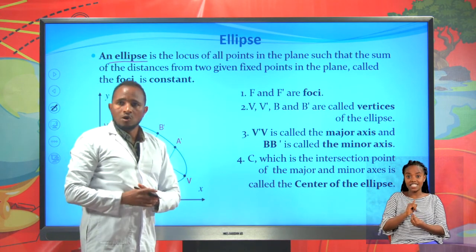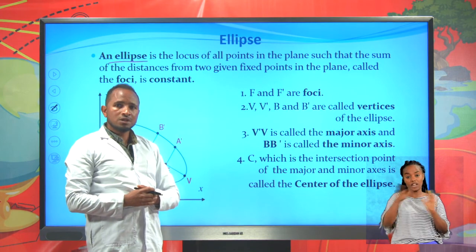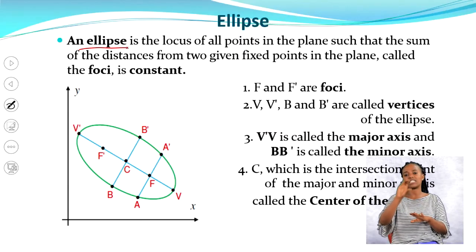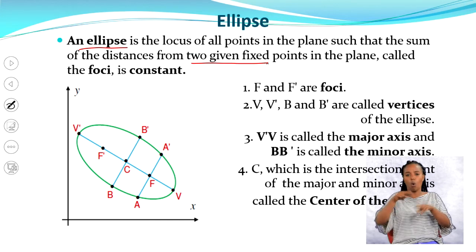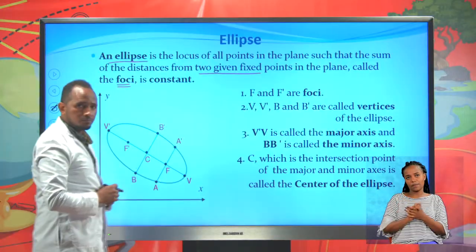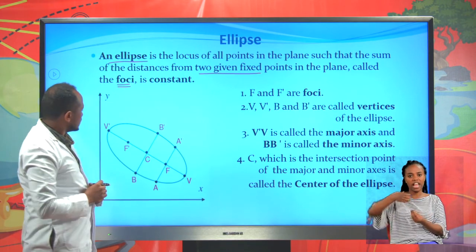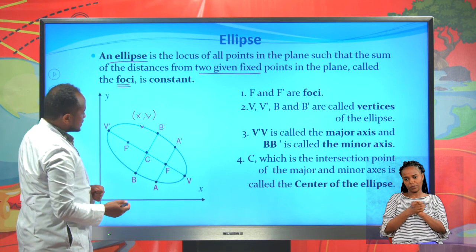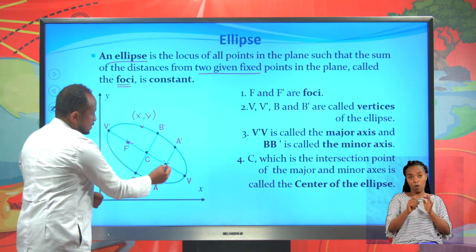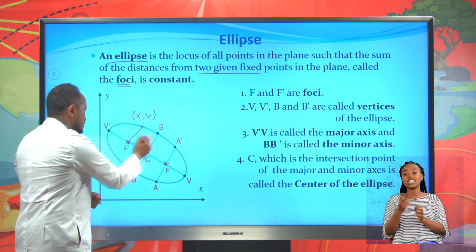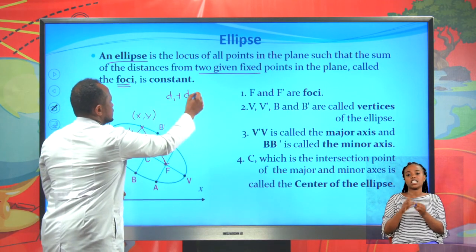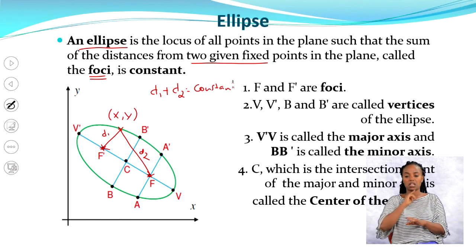An ellipse is the locus of all points in a plane such that the sum of the distances from two given fixed points in a plane is constant. These two fixed points we call them foci. If you take any arbitrary point (x, y) on the ellipse, the sum of the distances D1 and D2 from these two fixed points is constant.